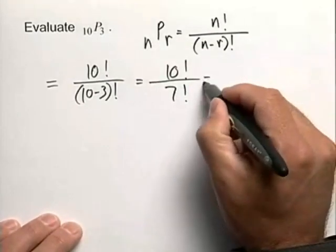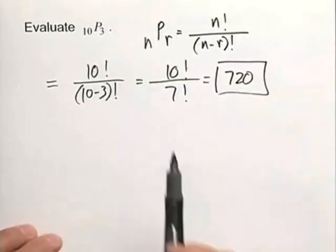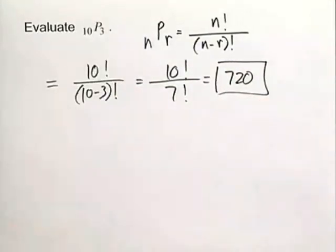Again, with a calculator, it's not too bad a problem. Come up with 720 for our value. And you're going to be a little bit careful putting this into your calculator. You have to get the notation and the representation correct in your calculator.